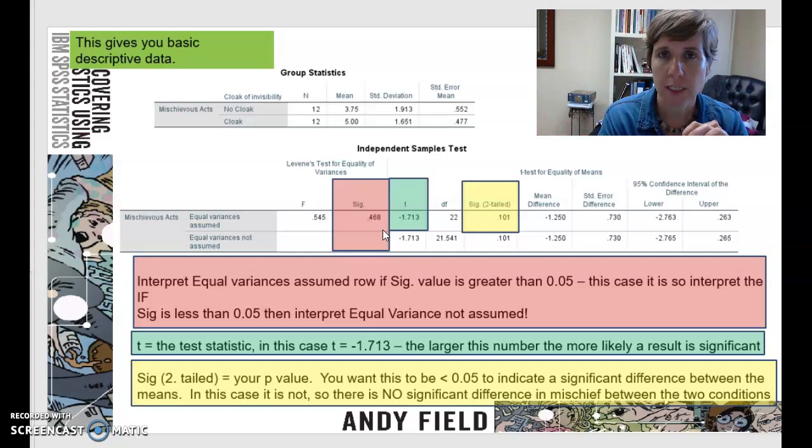If that number was less than 0.05, you're going to then have to interpret the bottom row of information, because you're then saying the way the scores are spread between the two groups is not equal. And in essence, what happens is SPSS adjusts for that inequality in that spread of scores. So in this example, our variances are equal.